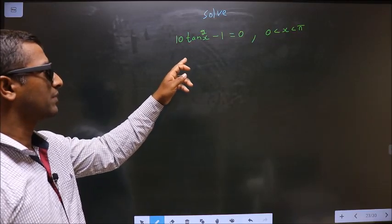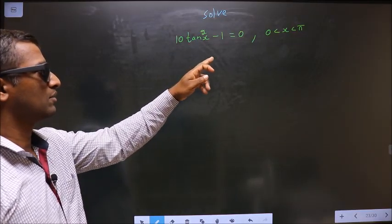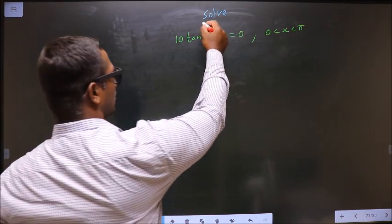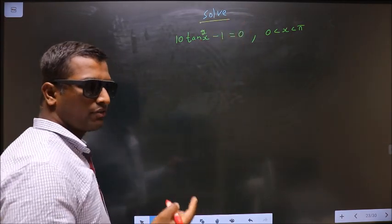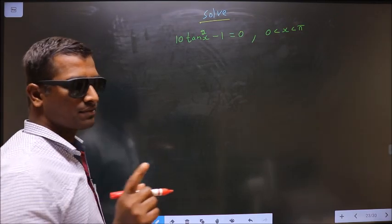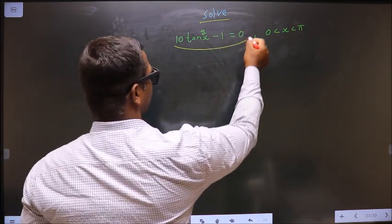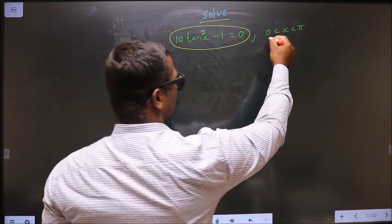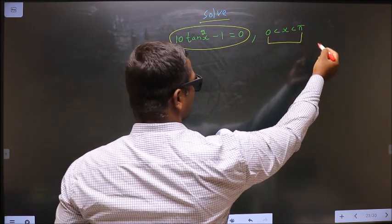Solve 10 tan²x - 1 = 0 where x lies between 0 to π. They told you to solve, so you should find the values for x satisfying this equation and also it should lie in this interval 0 to π.